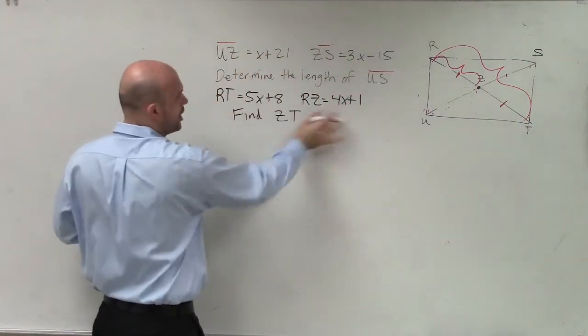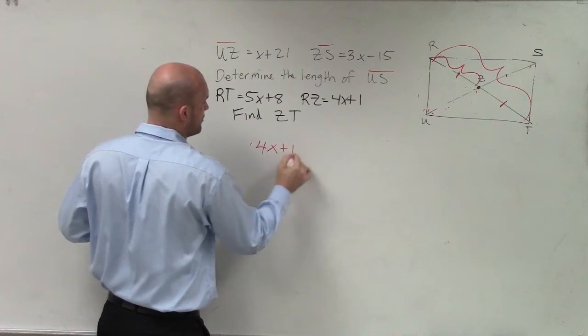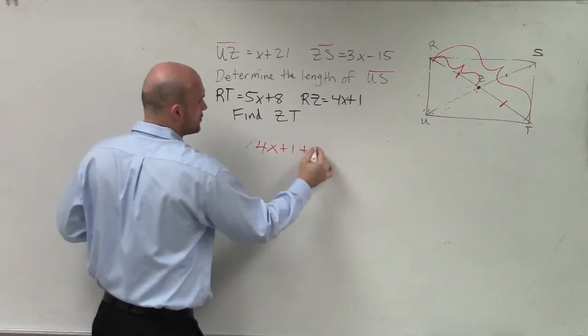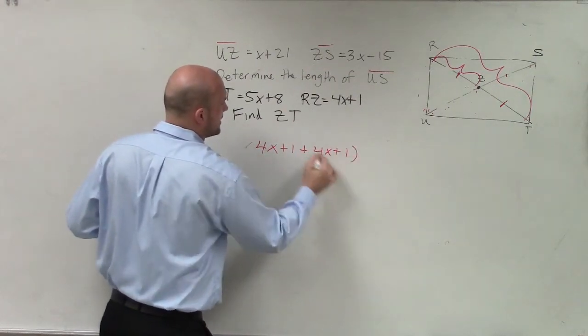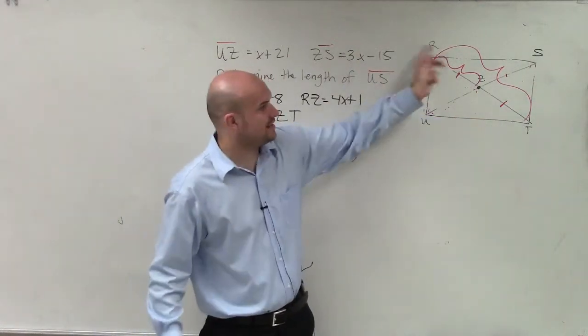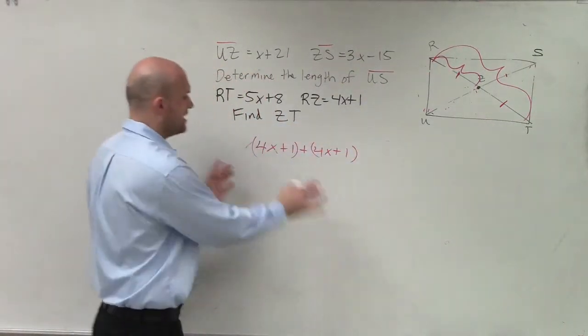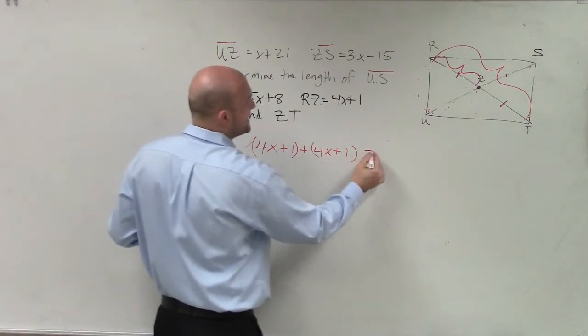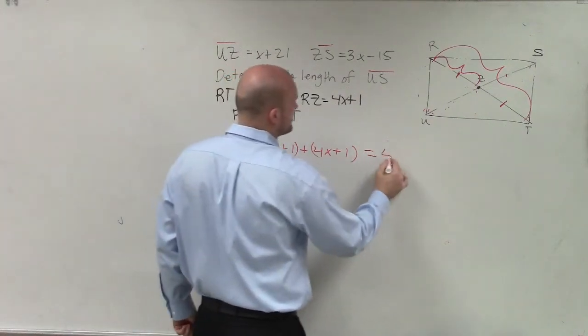So what we could say is RZ, which is 4x plus 1, plus 4x plus 1. If you add this plus this, that equals RT. So you could say this plus it itself again is going to equal RT, which is 5x plus 8.